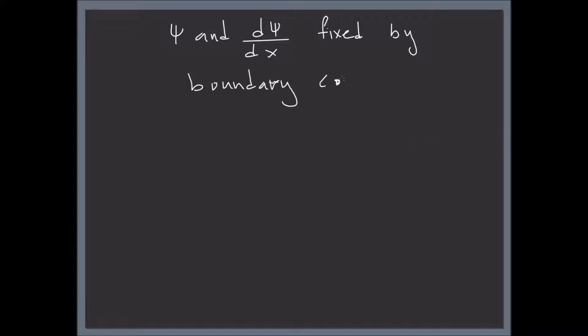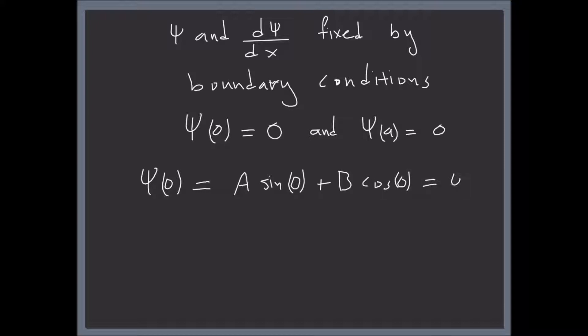Okay. Which means that psi of 0 must equal 0 and psi of a must equal 0. Okay, so when psi of 0 equals 0, this means that A times sine of 0 plus B times cosine of 0 should be equal to 0. By looking at this we know sine of 0 is 0, right, and cosine of 0 is 1, so 0 plus 1 is not equal to 0, so in order for this to be true, B must equal 0.